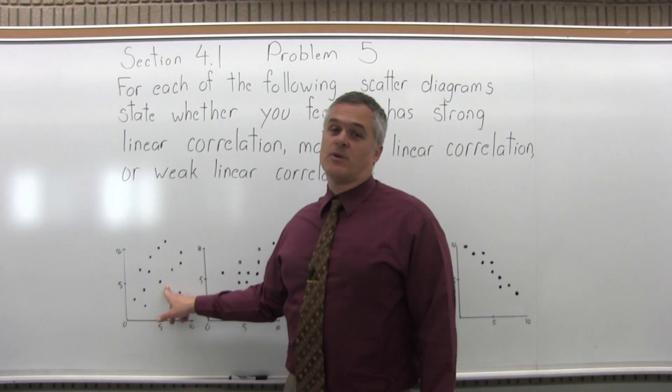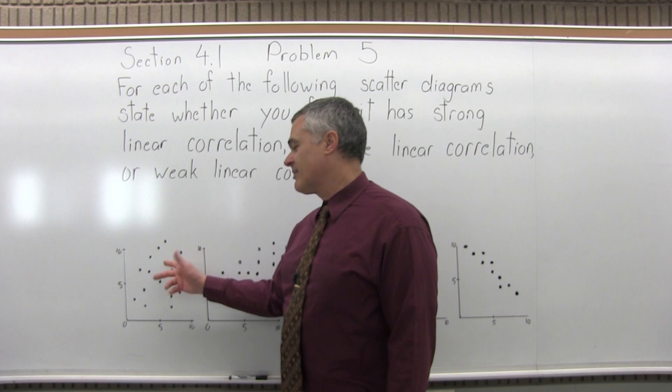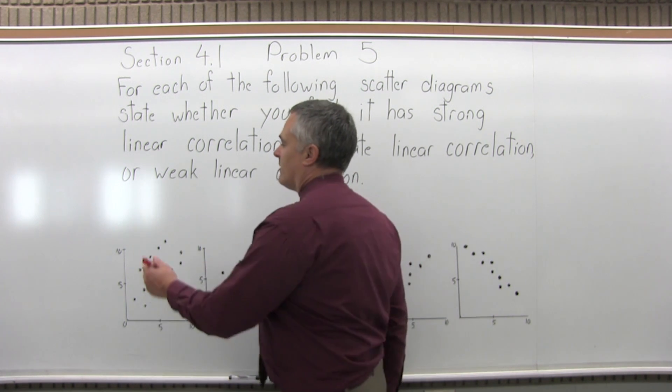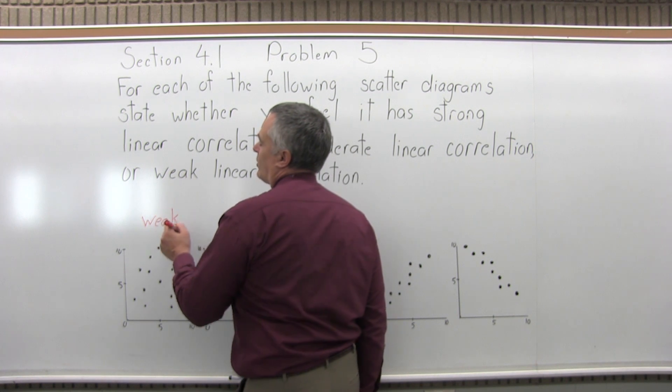So the first one, the points of the scatter diagram are really very spread out. There's no real telling how a line would go. So I would say the first one has weak linear correlation. You might even say no linear correlation.